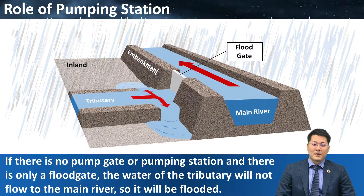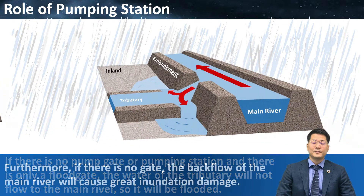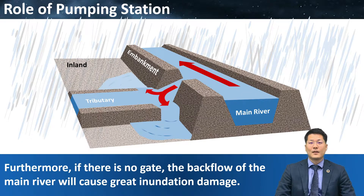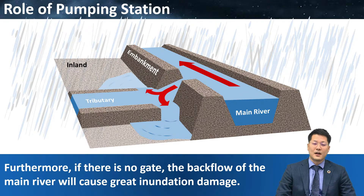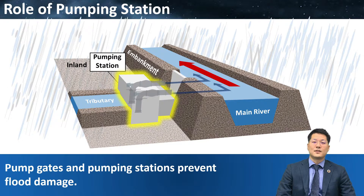If there is no pump gate or pumping station and there is only a flat gate, the water of the tributary will not flow to the main river, so it will be flooded. Furthermore, if there is no gate, the backflow of the main river will cause more inundation damage. Pump gates and pumping stations prevent such flood damage.